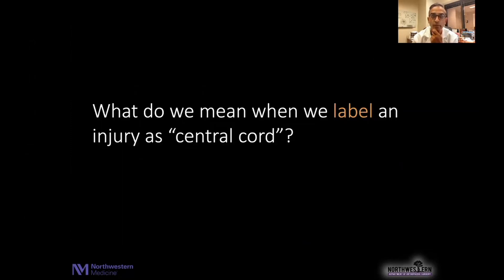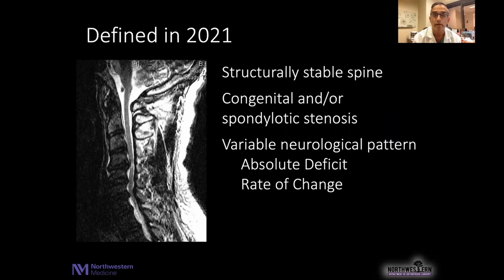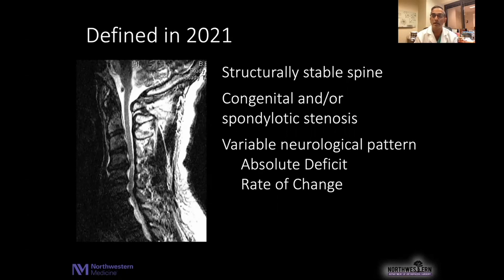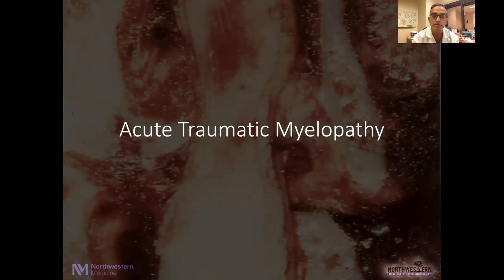We're asked the question: what do we mean when we label an injury as a central cord injury? Well, I think in 2021, this is oftentimes what we are talking about as spine professionals — that of a structurally stable spine, not a distraction or translation injury, but a structurally stable spine with a congenital and/or spondylotic stenosis and a varying neurological pattern, both in terms of absolute motor-sensory deficit and the rate of change of that deficit over time. This has oftentimes been lumped into a terminology called acute traumatic myelopathy, which may be more consistent with the actual neurological injury pattern and structural integrity we see when describing, quote-unquote, central cord injury.